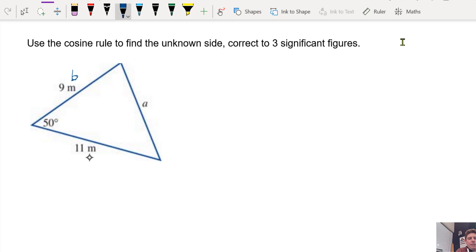this side C, and this is side A. The opposite of A is 50, or capital A. So this is the cosine rule.